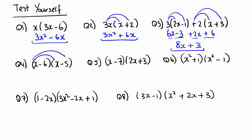X by x is x squared, x by minus 5 is minus 5x, minus 6 by x is minus 6x, and minus 6 by minus 5 — be careful, two minus signs give a plus — so plus 30. That gives us x squared minus 11x plus 30.